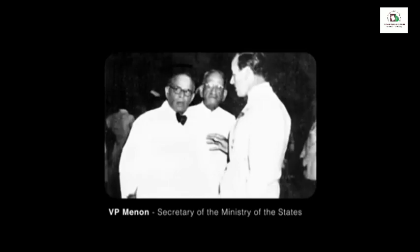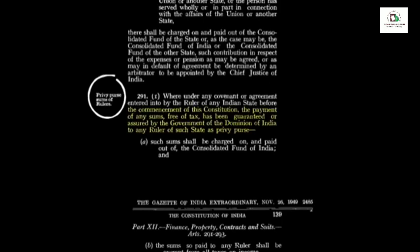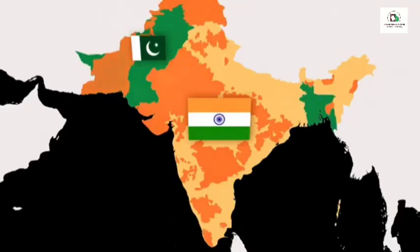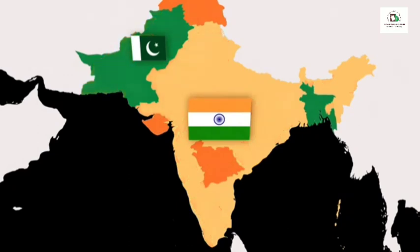It was important for the Indian government to integrate the princely states into India and give everyone a chance to live under democracy. To negotiate the merger, the Indian government put Sardar Patel, the deputy prime minister, and his right-hand man VP Menon in charge. To convince the native rulers to join India, the government offered the rulers a privy purse — annual payments from the Indian government to each ruler for their part in integrating India. Most of the princely states were small and could not govern themselves, so they joined India. However, three states in particular resisted.